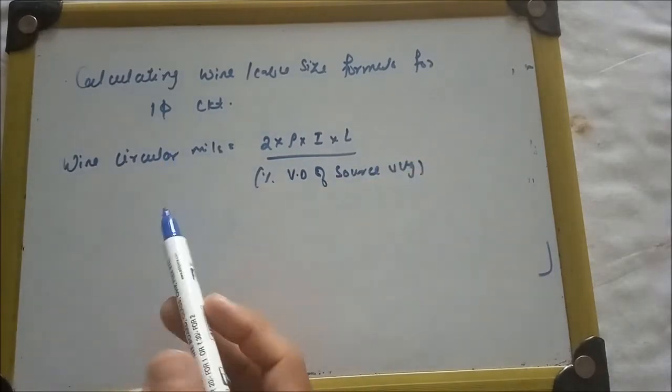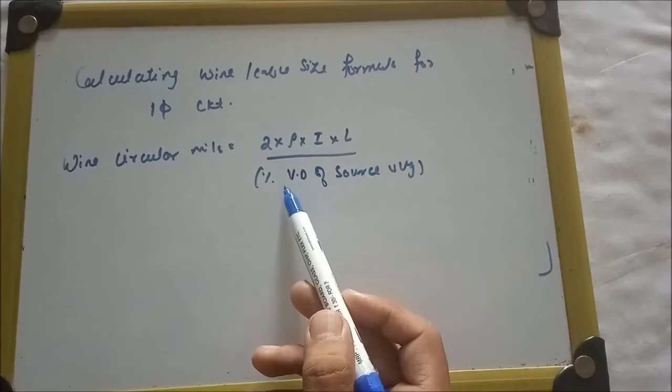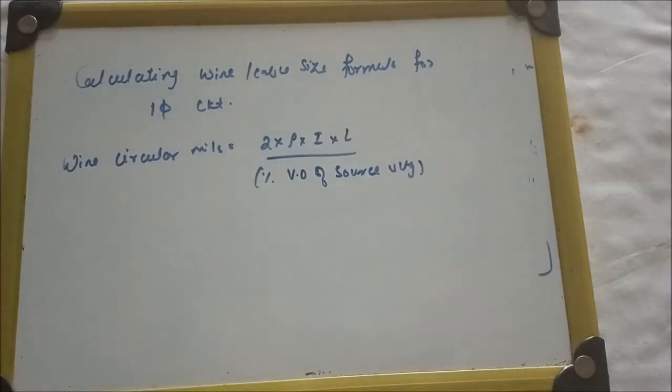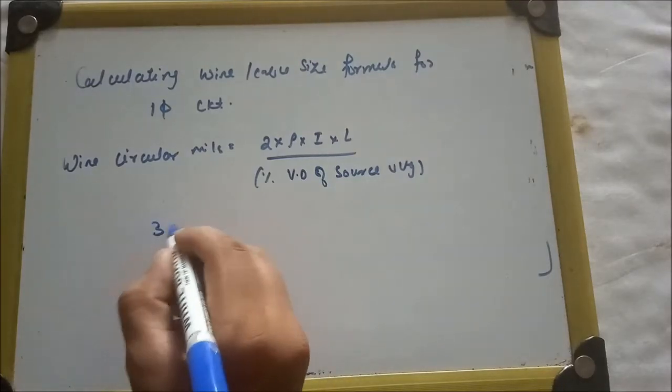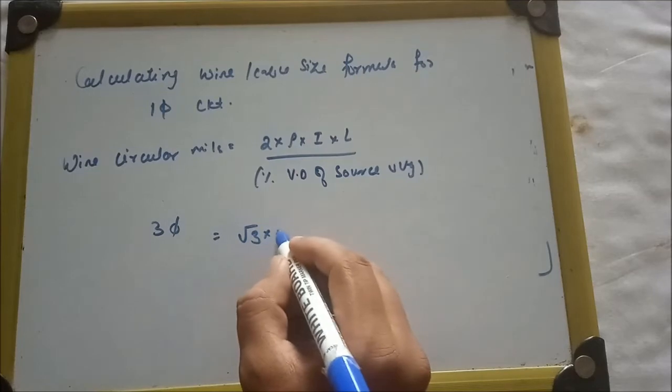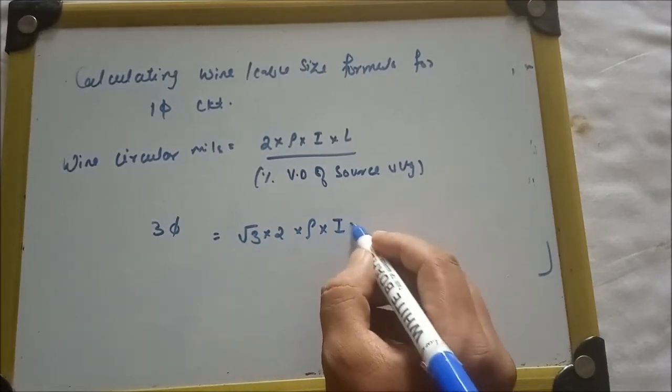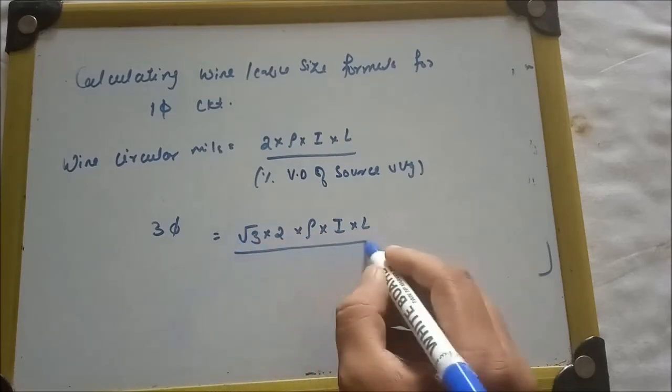For single-phase circuits, it is given as 2 × ρ × I × L divided by percentage allowable voltage drop of source voltage. For three-phase, it is given as √3 × 2 × ρ × I × L divided by percentage allowable voltage drop of source voltage.